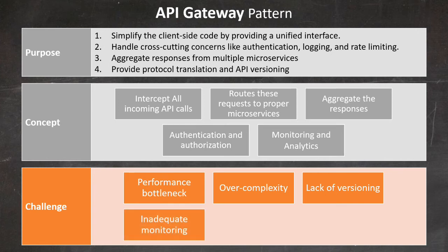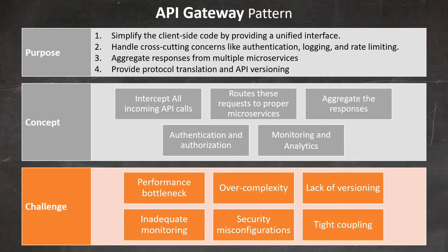Next is inadequate monitoring — not implementing comprehensive monitoring and alerting can make it difficult to troubleshoot issues. Ensure proper logging and monitoring are in place. There are also challenges from security misconfigurations — incorrectly implementing authentication and authorization can lead to security vulnerabilities. Regularly audit and test security configurations. Finally, tight coupling — designing the API Gateway with too much knowledge of the underlying microservices can lead to tight coupling. Strive for loose coupling to maintain flexibility. By addressing these challenges, organizations can effectively implement the API Gateway pattern.